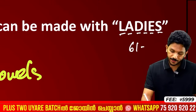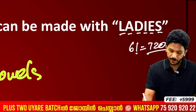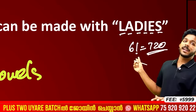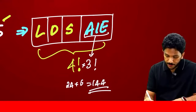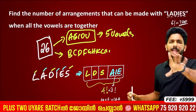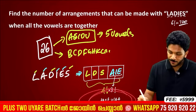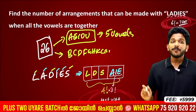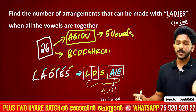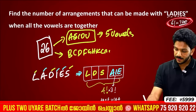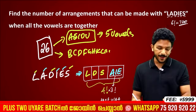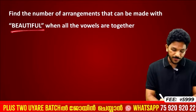So the total arrangements with vowels together is 4! × 3! = 24 × 6 = 144. And 6! = 720, which is the total arrangements. For the vowels-together condition in LADIES, the answer is 144.